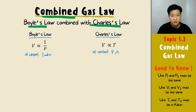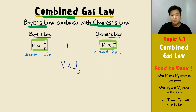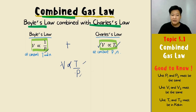Now we combine them: volume is inversely proportional to pressure, and volume is directly proportional to temperature. Combining both gives us volume directly proportional to temperature but inversely proportional to pressure — that is your combined gas law.